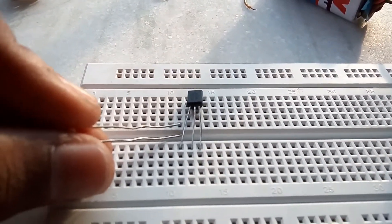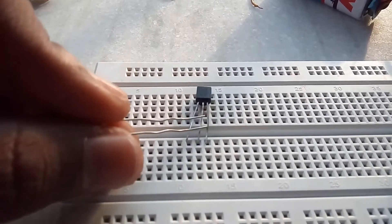The first one is the collector, the second one is the base, and the third one is the emitter.